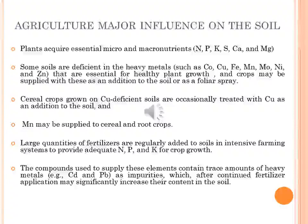Large quantities of fertilizers are regularly added to the soil in intensive farming systems to provide adequate nitrogen, phosphorus and potassium for crop growth. The compounds used to supply these elements contain various amounts of heavy metals such as cadmium and lead as impurities. After continued application of fertilizer, these metals may increase their content in the soil. Application of certain phosphate fertilizers inadvertently adds cadmium and other potentially toxic elements including chlorine, mercury and lead.